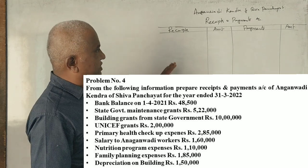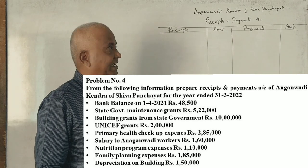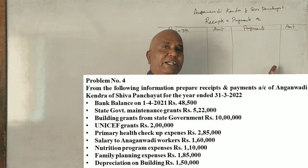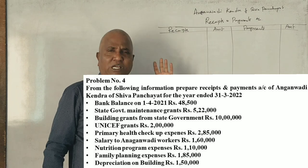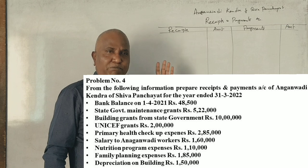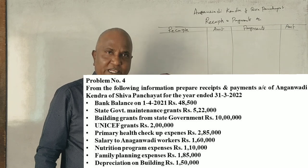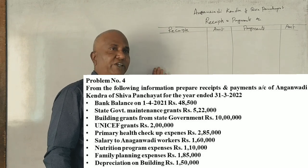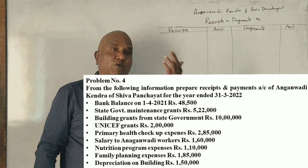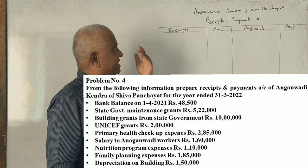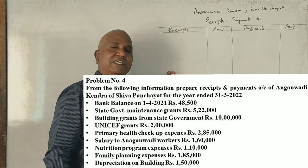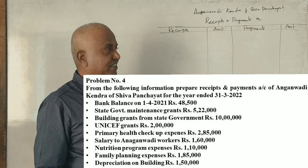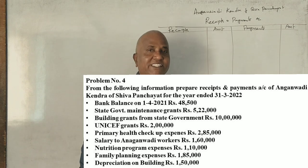First of all, in the receipts and payments account — receipts and payments is based on cash. If you have cash, you will have a capital receipt. The bank account is now part of the receipts and payments record.